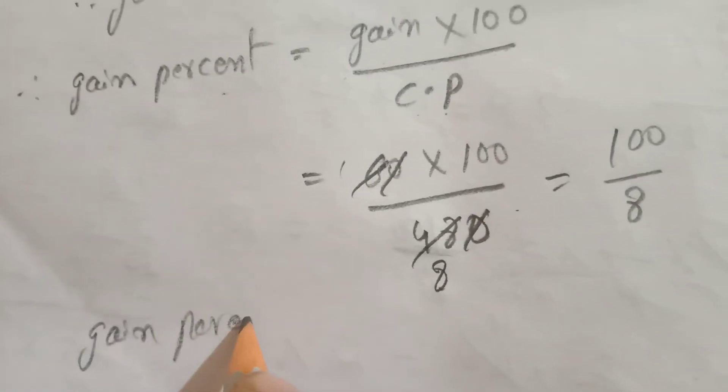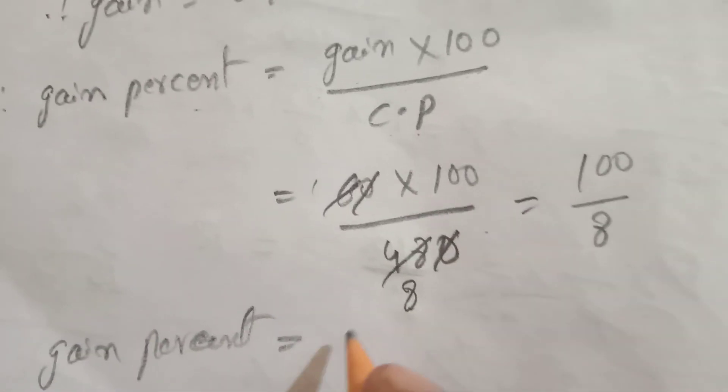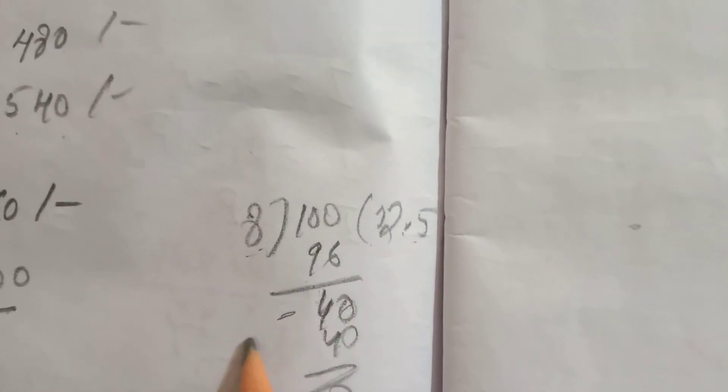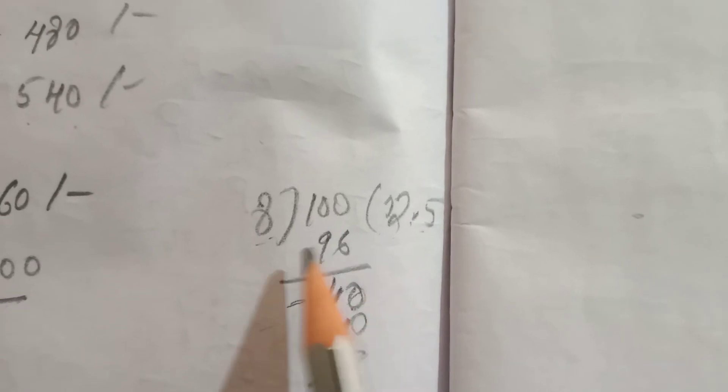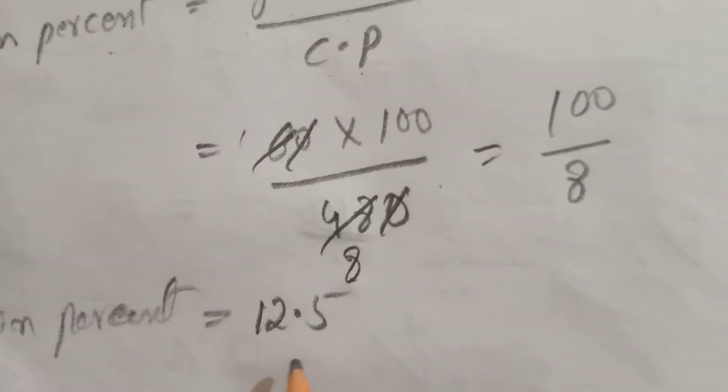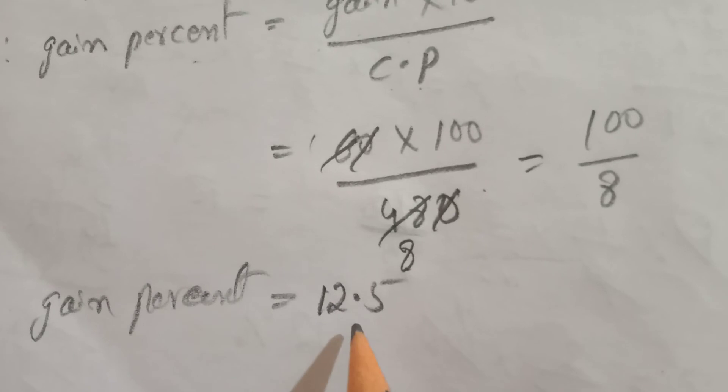8 into 12 gives 096, with 4 remaining. Bring down: 40, 8 into 40 is 5, giving 12.5. Therefore, the gain percent is 12.5.